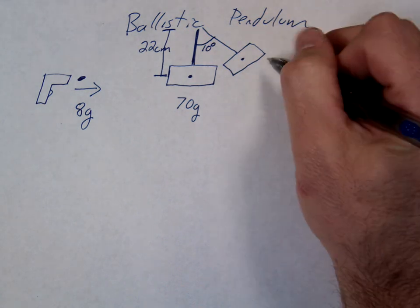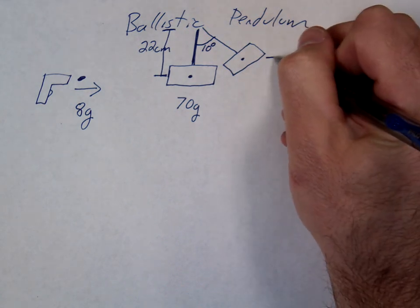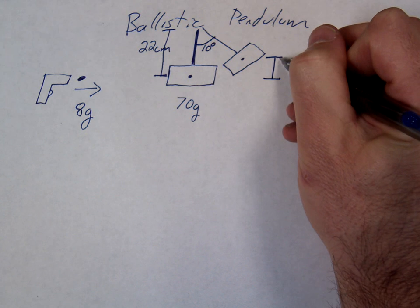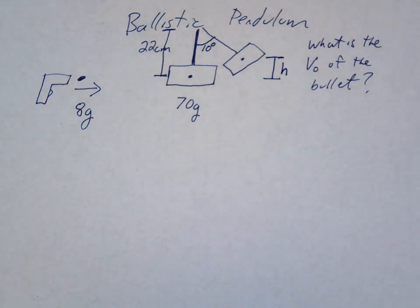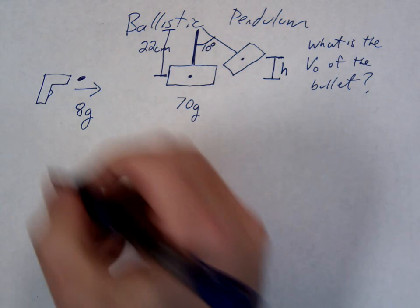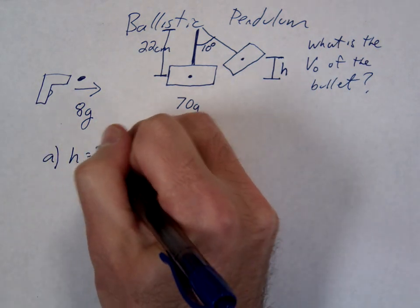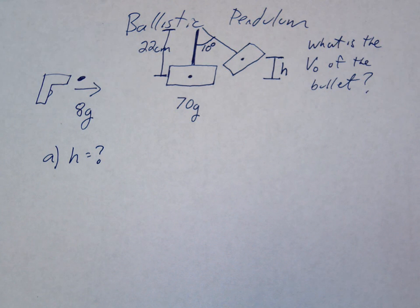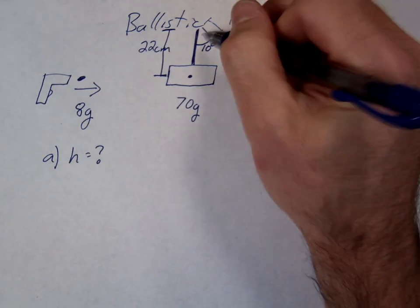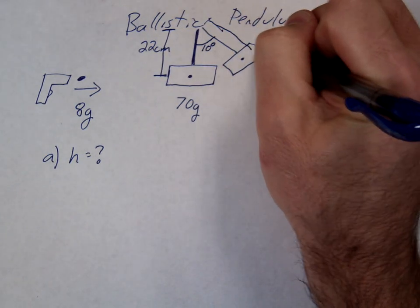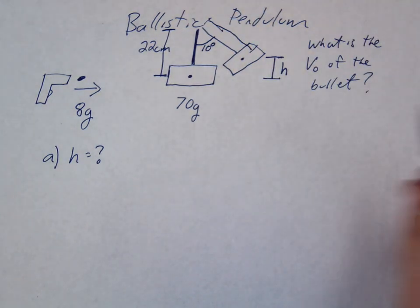So our first step is to figure out how high this block went. So what is the h, the height off the ground? Let's figure that out first. To figure that out, we're just going to do some geometry. We have done this problem before. Notice this is 22 centimeters, therefore what's this length all the way from here to here? 22 centimeters.